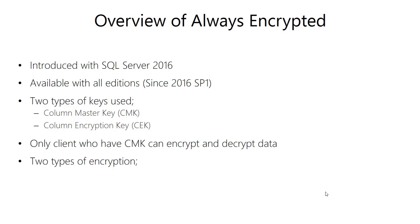There are two types of encryptions available with Always Encrypted. One is called Deterministic and the other is called Randomize. Deterministic always produces the same ciphertext for the same plain text, but Randomize generates a different ciphertext for the same plain text. If you want to make sure a column can be used for searching or grouping, use Deterministic. If you do not use your column for grouping or searching, it is always better to use Randomize.